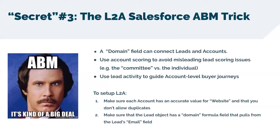Let's say that Bob's Battery Shop is an unqualified, too-small account for you, and they have one person who fills out 10 forms. Let's say they get 20 points per form, so they get 200 points total. They look like a very important, highly engaged, top-of-the-line lead — even though they're maybe not a very qualified account.